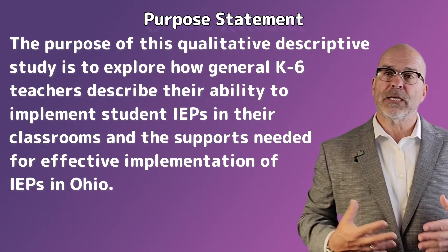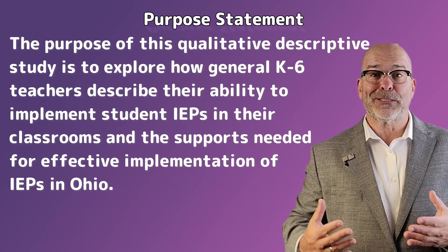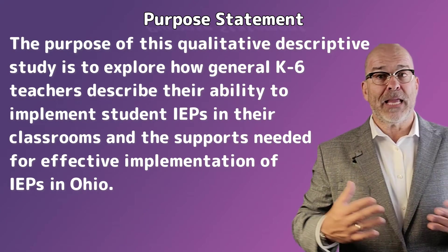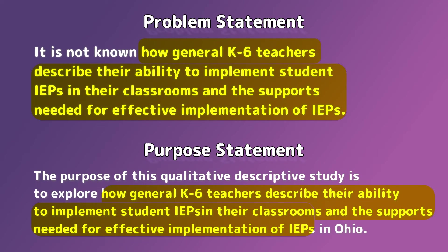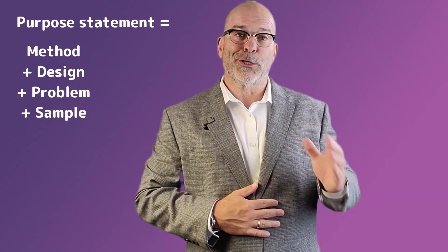Now let's look at the purpose statement: 'The purpose of this qualitative descriptive study is to explore how general K-6 teachers describe their ability to implement student IEPs in their classrooms and the supports needed for effective implementation of IEPs in Ohio.' Notice alignment — the wording from the problem statement is exactly the same in the purpose statement and the research questions. We simply add 'The purpose of this qualitative descriptive study is to explore' at the front, and the location — Ohio — at the end. The purpose statement is the method plus the design plus the problem plus the sample plus the location.